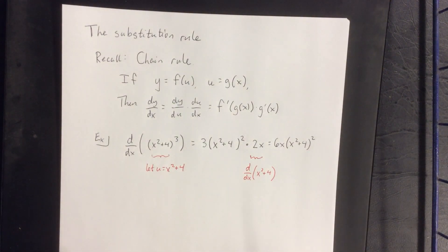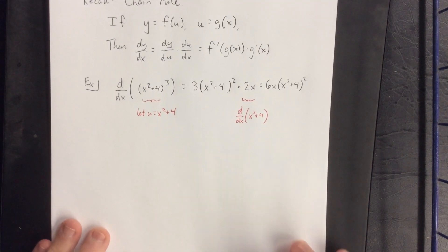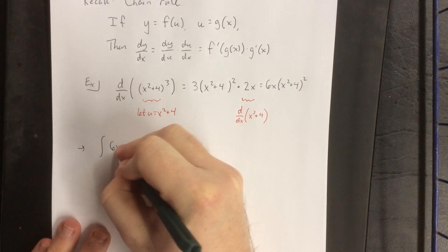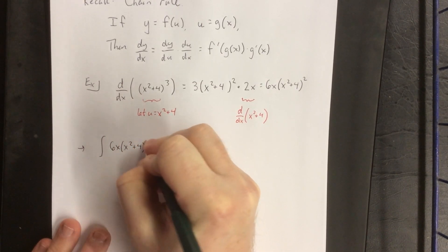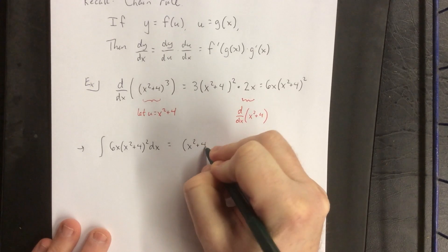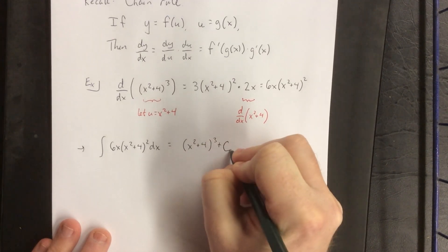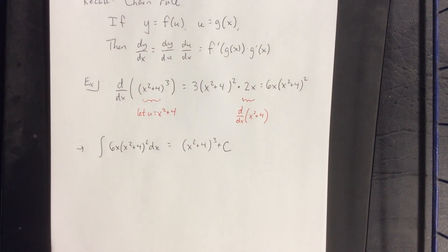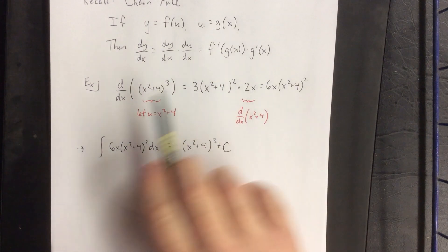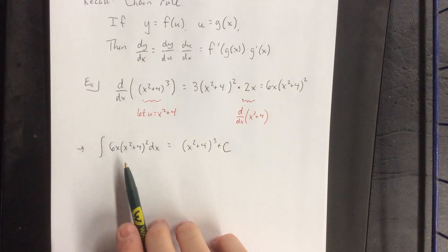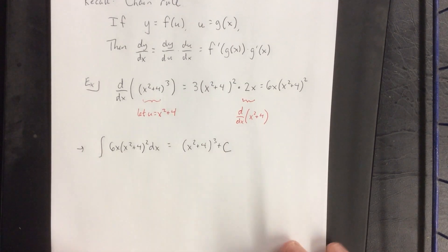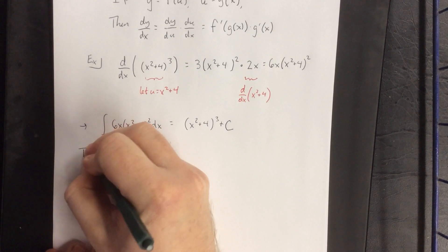Now that we have an idea about antiderivatives as well as integrals, there would be a corresponding integral statement. That corresponding integral statement is that the integral of 6x times x squared plus 4, quantity squared, dx is equal to the most general antiderivative. The question becomes: given something like this, how would we be able to determine that the antiderivative of this function would be that function? That's where we introduce the substitution rule.